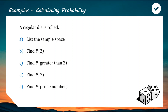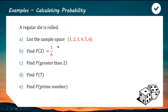A regular standard die is rolled — let's list the sample space. The sample space is our list of possible outcomes, so for a standard die we list from one to six. It's good to use curly brackets — set notation — though it's not essential, just preferred. So we've got six elements in our sample space. Finding the probability of the outcome two: two is one of the six elements, so it's one out of six.